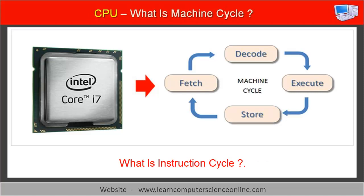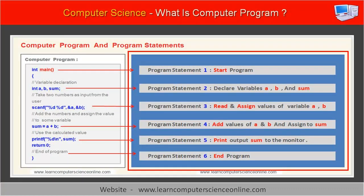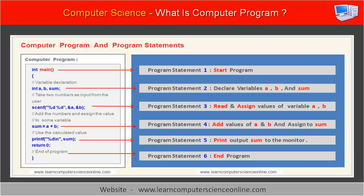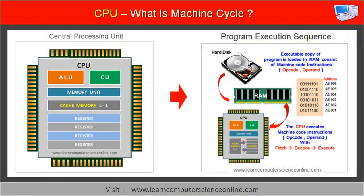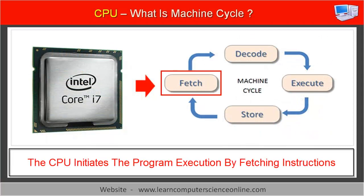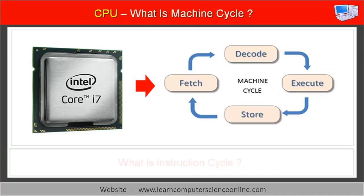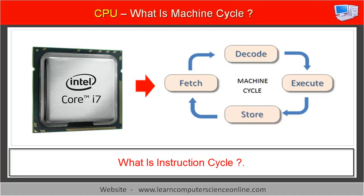Let us first start with understanding the instruction cycle. The computer program consists of a number of program statements. These statements are also referred to as program instructions. During program execution, the operating system loads the program into the main system memory, RAM. The CPU initiates the program execution by fetching these instructions one by one from the main memory RAM. The machine cycle is part of instruction cycle.